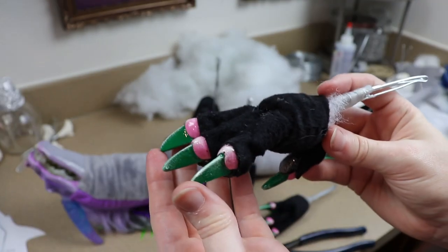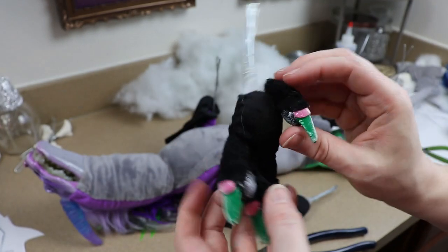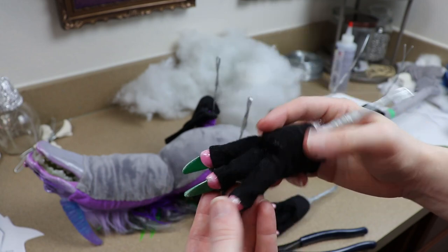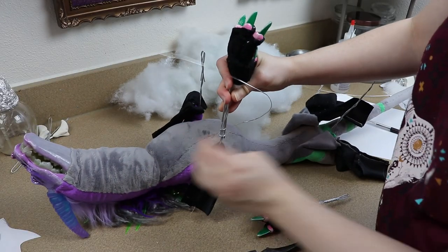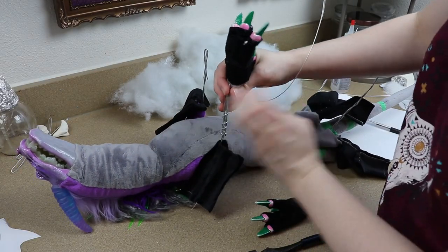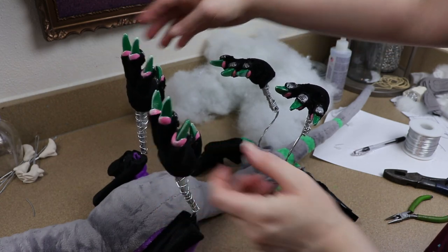And then once you have your poseable feet all put together, you can then add them to your art doll. So for mine, I had to add them to the wireframe. I just wrapped them in place, connecting them, and then sewed the fabric around the base of the foot, connecting it to the rest of the leg.